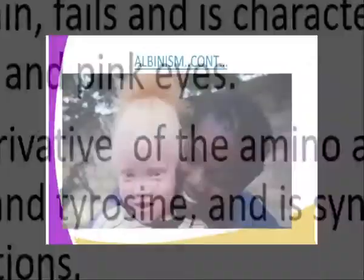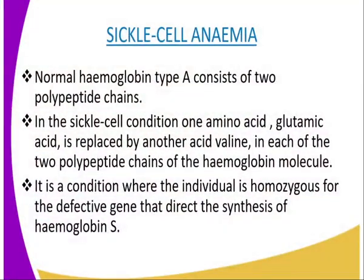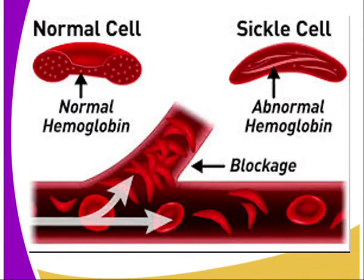The second defect we are going to look at is sickle cell anemia. This is another example of gene mutation through substitution. A normal hemoglobin type A consists of two polypeptide chains. In the sickle cell condition, one amino acid — glutamic acid — is replaced by another amino acid, valine, in each of the two polypeptide chains of the hemoglobin molecule. The resulting hemoglobin, known as hemoglobin type S, is defective and has a marked difference from the normal one as a result of this seemingly minor substitution.